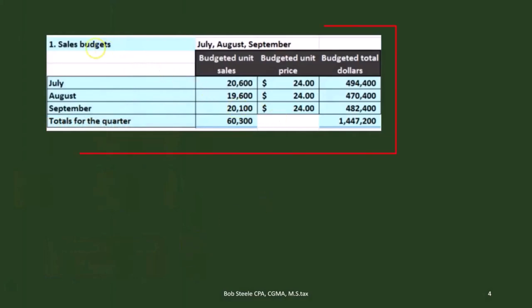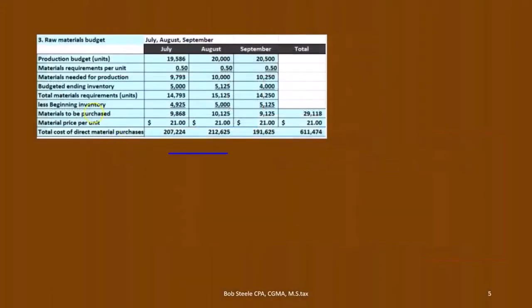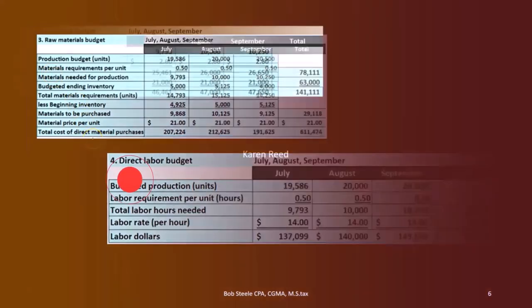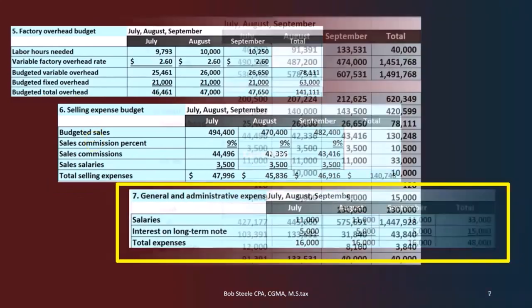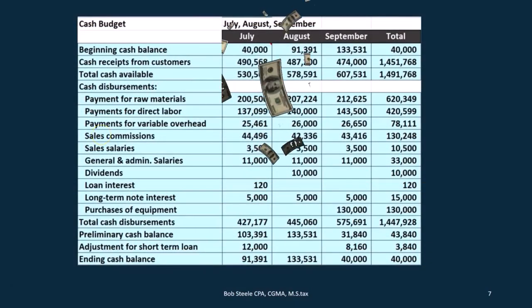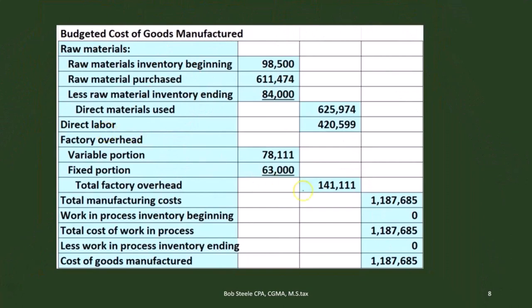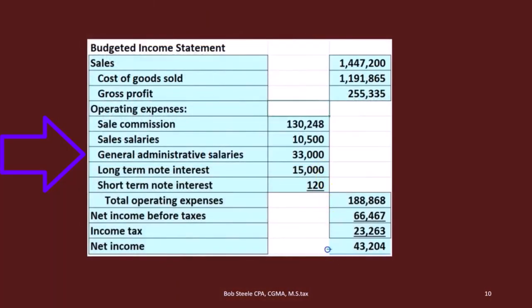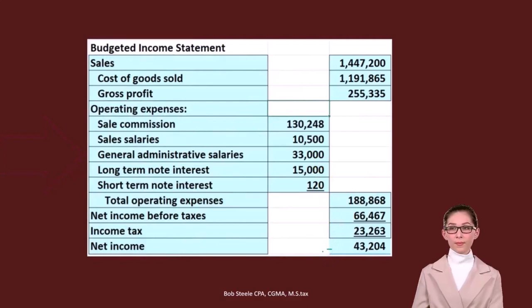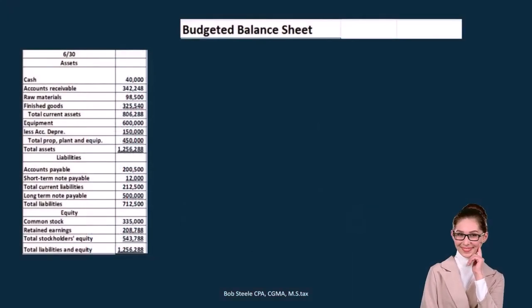So we've done this so far. We've already done the sales budget — that's step one. Step two, we used that to do the production budget. Then we had the raw materials budget, the direct materials budget, and then the factory overhead budget, the selling expense budget, the general and administrative expense budget. We used that to create the cash budget. And then the budgeted cost of goods manufactured, so that we can get the cost of goods manufactured number that we would then use to calculate the cost of goods sold number. We used that to then calculate the income statement. We've done all that so far, and we're going to bounce back and forth to some of these items in order to use them to create the balance sheet — the point we are at at the end of the time period.